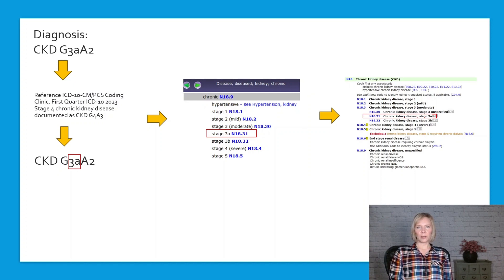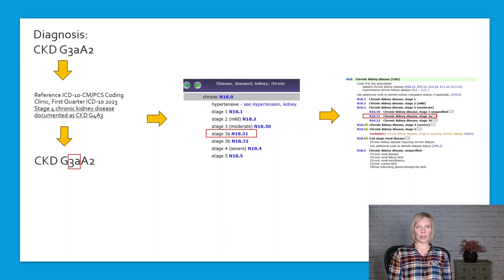Here we have a diagnosis of CKD G3AA2. Remember, coding clinic has established that this documentation may be used for coding and that the stage is indicated by the number following the G. So in this case, when looking up chronic kidney disease in the alphabetic index, we select the code for Stage 3A since that is the number immediately following the G.